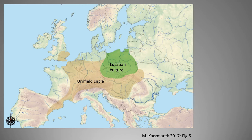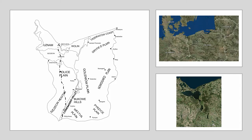My test area is the Szczecin Lowland — an area on both sides of the lower Oder River, the Szczecin Lagoon, and the Pomeranian Bay, spanning both sides of the contemporary Polish-German border. It is the northwestern part of Poland, and in fact the northwestern marginal area of the Urnfield/Lusatian area — which is why I have a problem with this material.